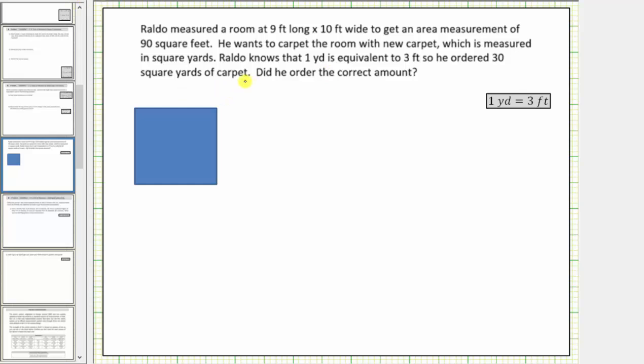Let's convert ninety square feet to square yards to see how much carpet Roldo should have ordered. Before we do this though, we need to understand the units of square feet. Ninety square feet or ninety feet squared is equal to ninety feet times feet. Again, feet times feet gives us square units which is how we measure area.